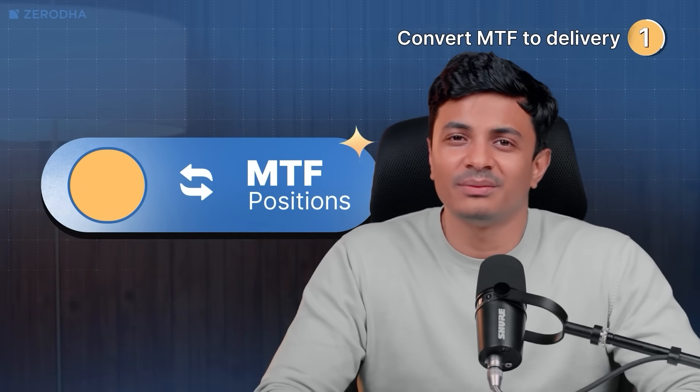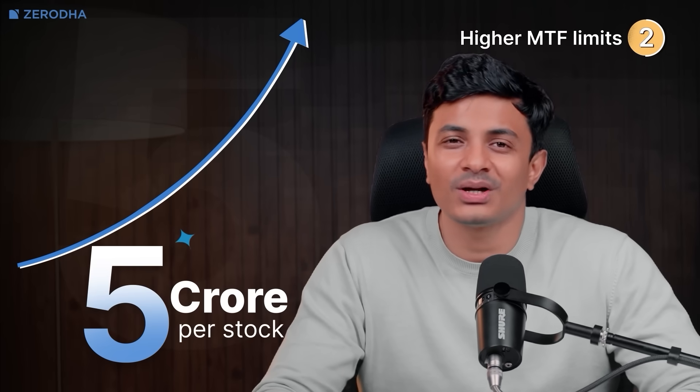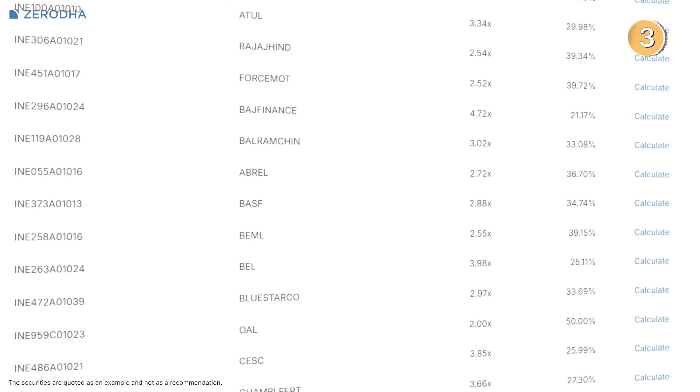Since launching MTF last year, we've been working on several enhancements to improve your MTF experience at Zerodha. Recently, we made four useful improvements: Convert MTF to Delivery — you can now convert your MTF positions to delivery with just a few clicks, with no need to square off or exit separately. Higher MTF Limits — you can now trade with up to 5 crore rupees per stock and 25 crore rupees per account. More MTF Eligible Stocks — MTF is now available on 1,300+ stocks. And finally, GTT and AMO for MTF — you can now place GTT and AMO orders for MTF positions, allowing you to automate trades without needing to monitor the market constantly.